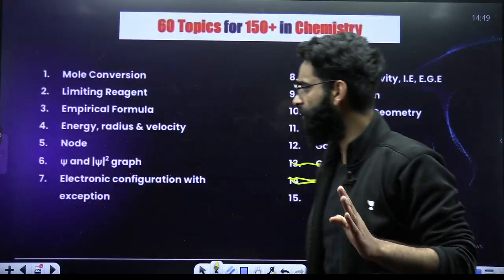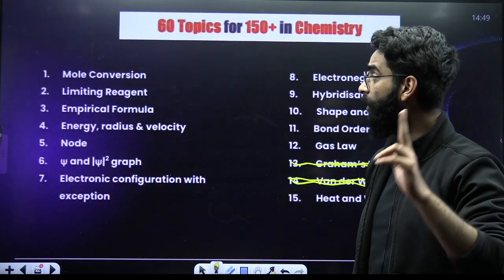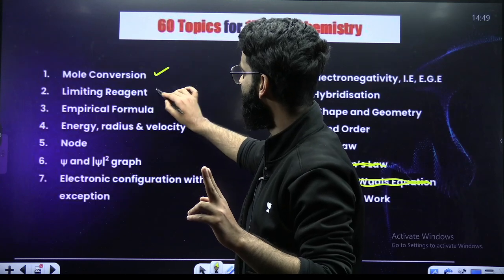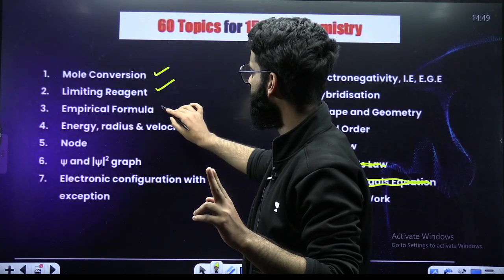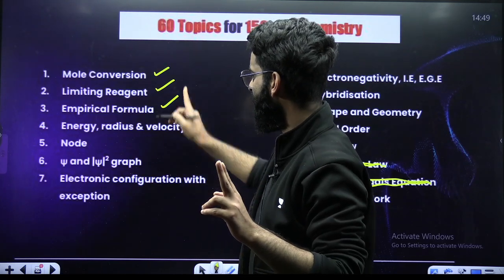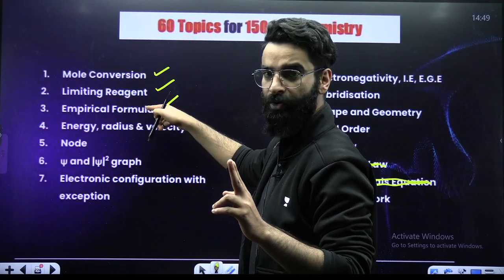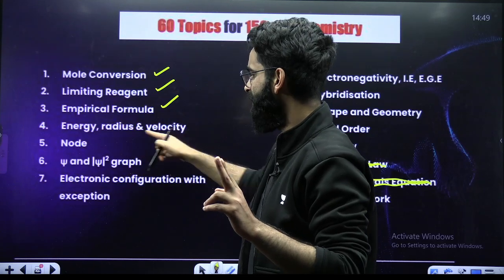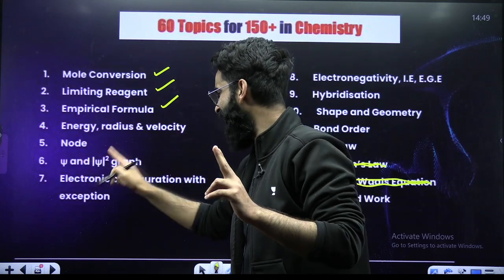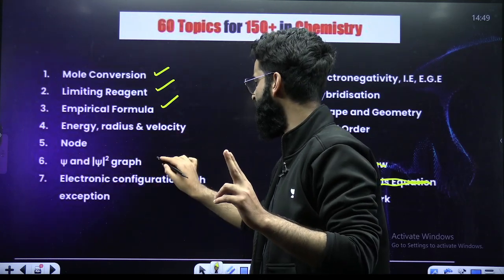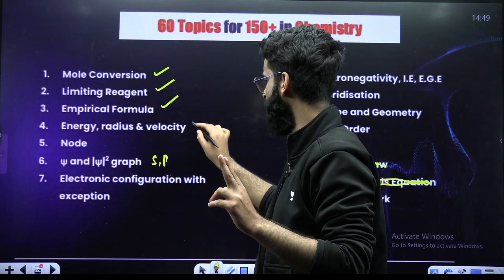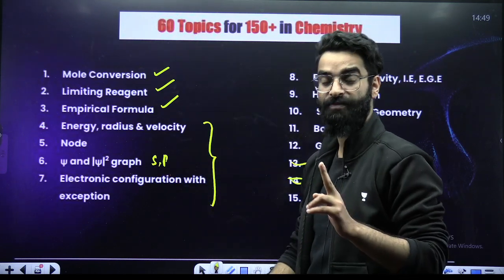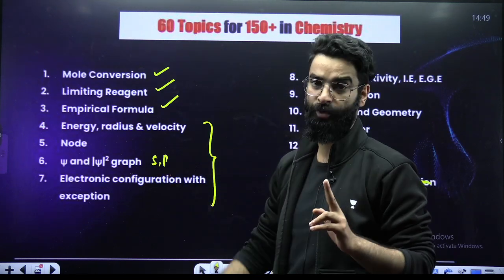Chapter-wise, do these topics on priority. You have got Mole Conversion, Limiting Reagent, Empirical Molecular Formula from the Mole Concept chapter. Then Energy, Radius, Velocity, Nodes, Psi and Psi-square graphs for S and P orbitals from Atomic Structure, and Electronic Configuration with exceptions involving Chromium and Copper.